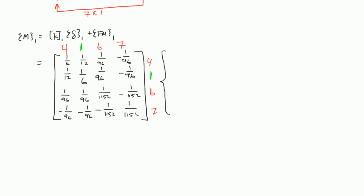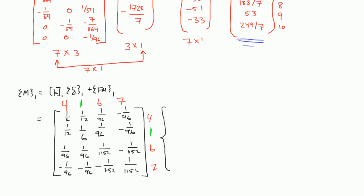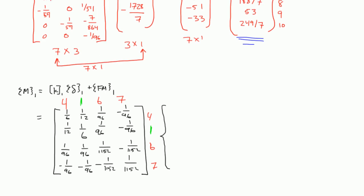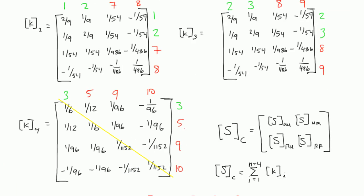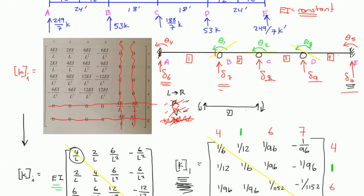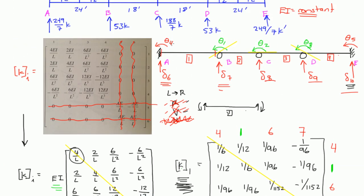Delta sub 1 is all the deformations happening at element 1, okay? Now, if we look at element 1, element 1 is right here, right? It has degree of freedom 4, 1, 6, 7. So we're going to write the deformations in that order, 4, 1, 6, 7.